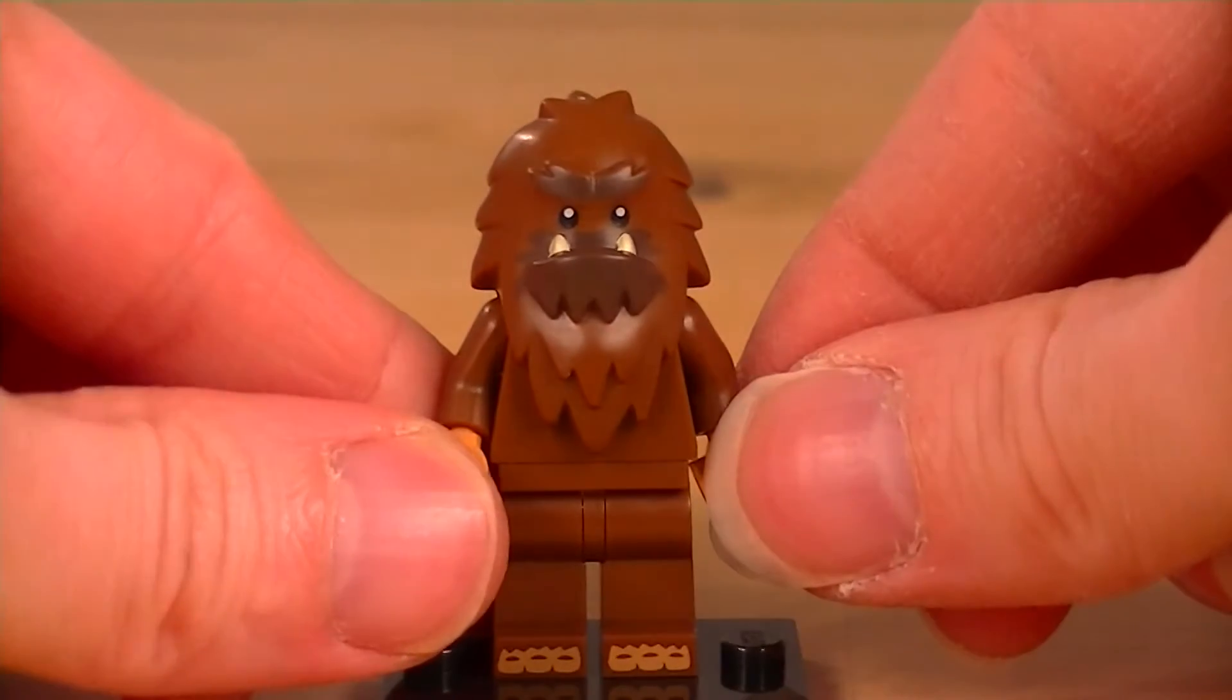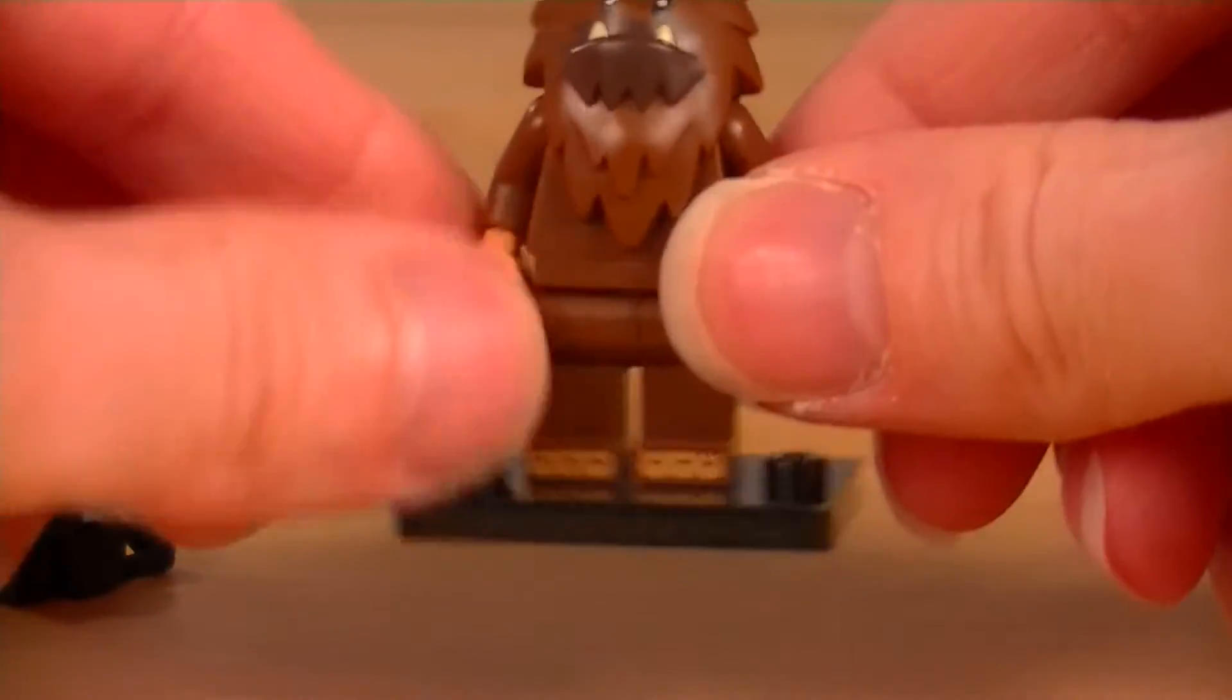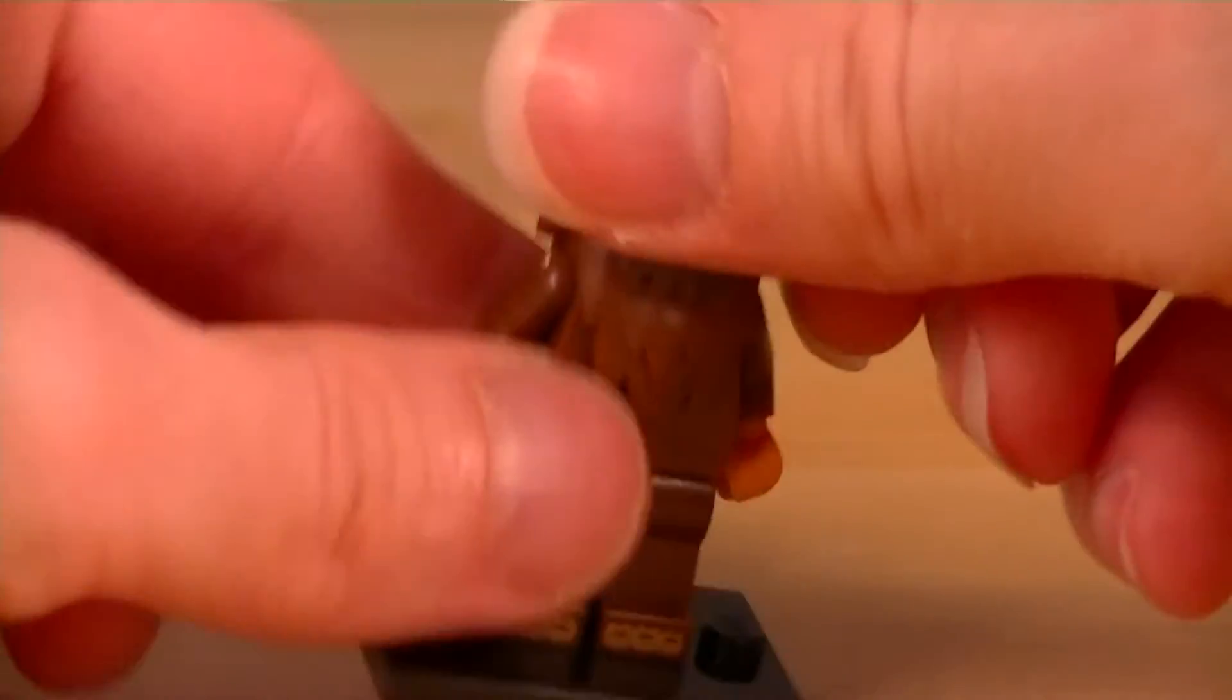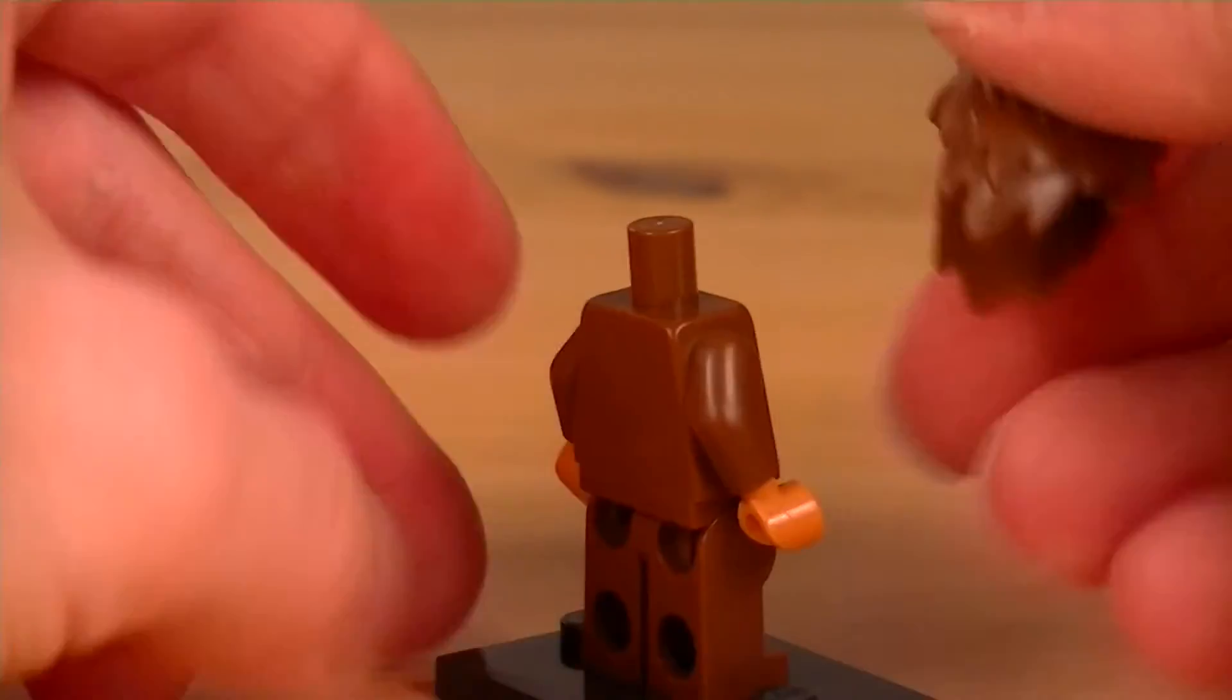We'll just take his camera off here. That's his accessory. Pretty plain, no printing except for this right here on the feet. And around the back, I'll just show you, no printing anywhere on the torso.